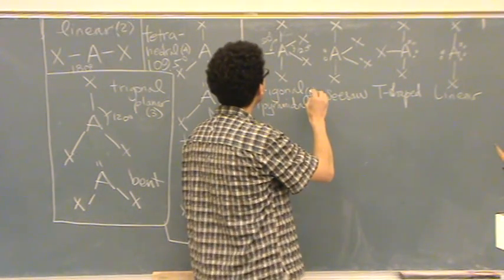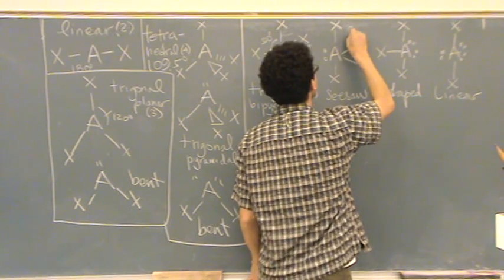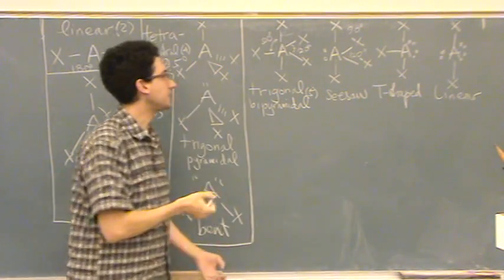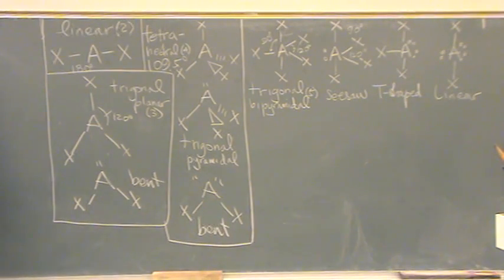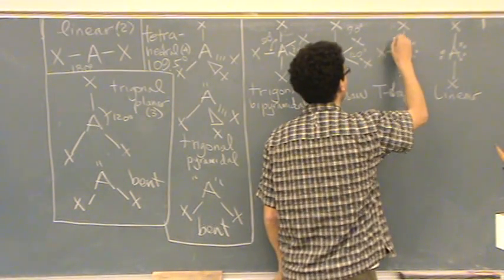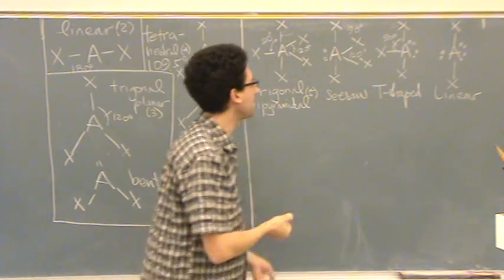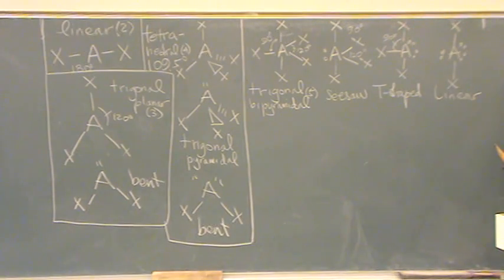For a seesaw, it's still 120 and 90. So the same. T-shaped, if you look at it, what are the bond angles? Well they're both a T, yeah, it has to be 90. There's nothing else it could be. When you look at linear, what does it have to be? It has to be 180.